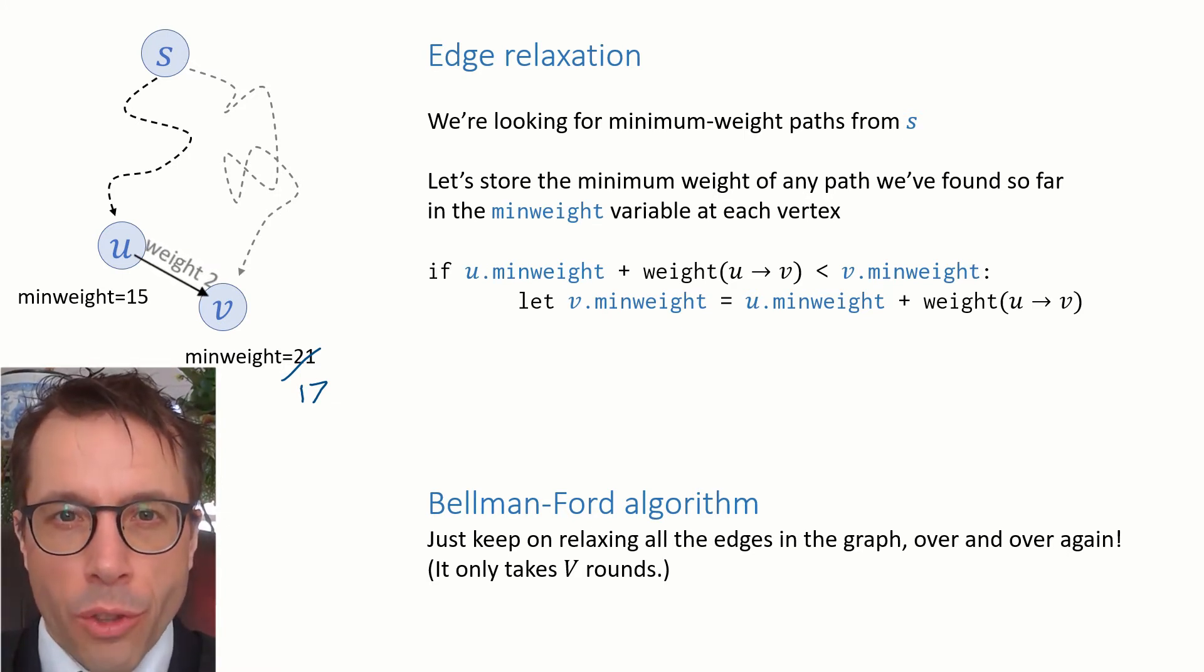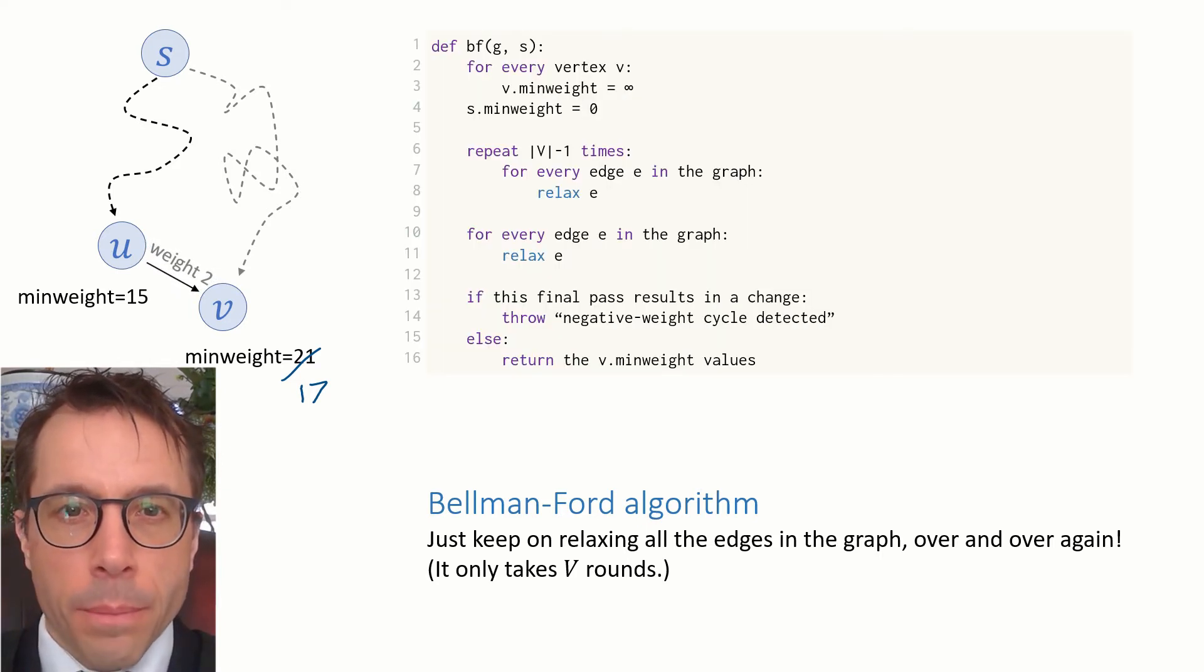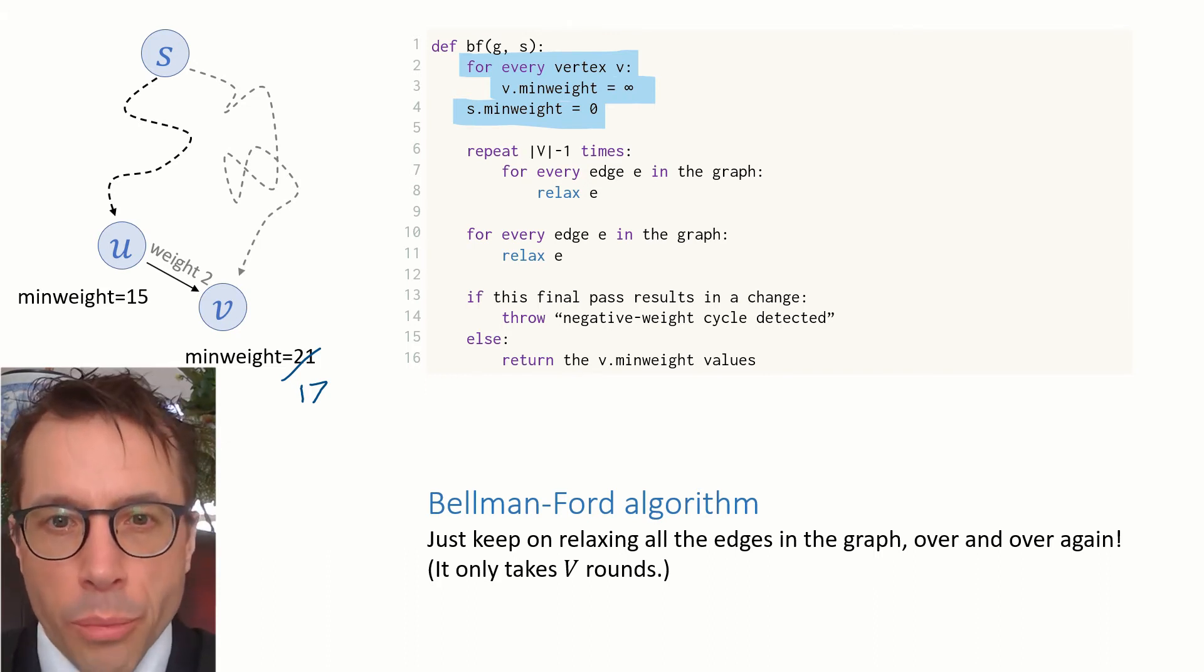In other words, this procedure will definitely terminate. Second, they figured out what to do about those pesky negative weight cycles that we came across earlier. Here's their full algorithm. It starts off like Dijkstra's algorithm, setting the min weight to infinity everywhere except for the start vertex, which gets weight zero.